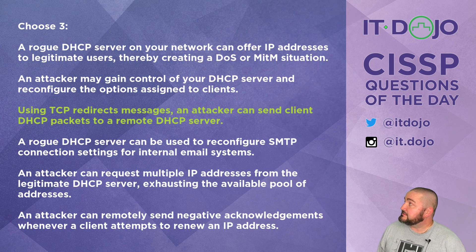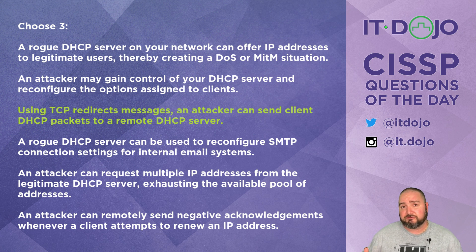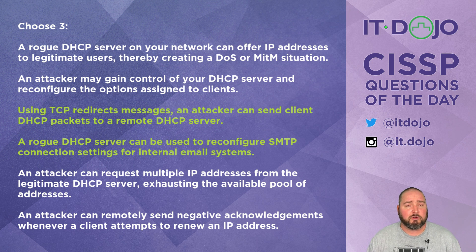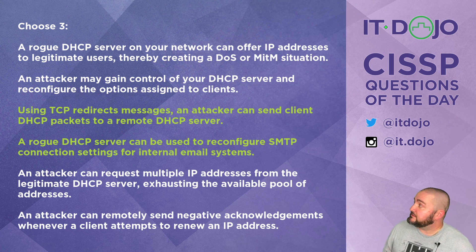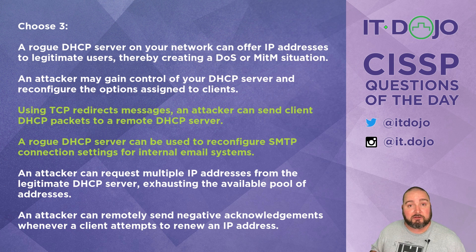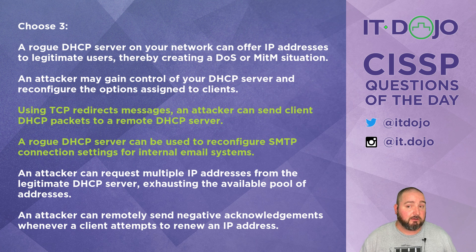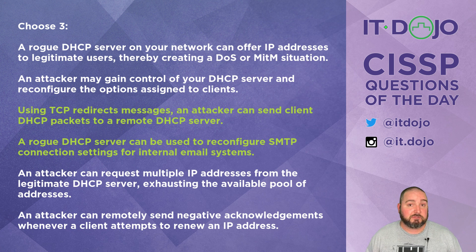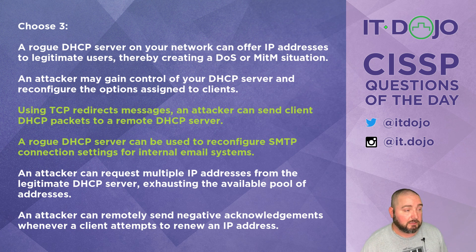The next option says a rogue DHCP server can be used to reconfigure your SMTP settings for your internal mail system — that's just made-up. There is nothing about DHCP that would allow that to happen, so it is not a legitimate concern and is therefore a correct answer. The following option says an attacker can request IP address after IP address, typically by spoofing a MAC address, to exhaust the pool of available IP addresses on the DHCP server. That is absolutely a concern in a DHCP environment, so it is not one of the correct answers.